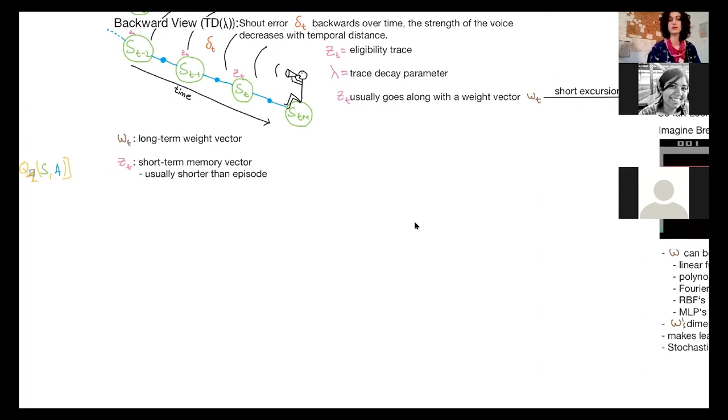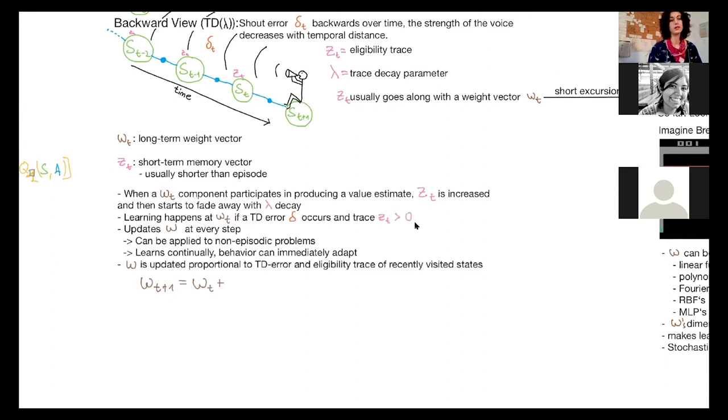And we have, so we can think of it as a long-term weight vector. And then we have a short-term memory vector, the eligibility trace, which remembers the most recent states that we were in, or the most recent activities in the weight vector. And this is usually shorter than an episode.